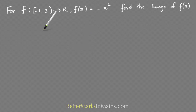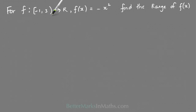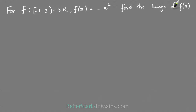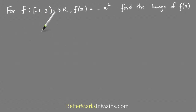Here's another example with a restricted domain. f maps from −1 inclusive to 3 non-inclusive onto ℝ, where f(x) = −x². You have to find the range of f(x). You already know the domain, so again what you really need to do is sketch it.